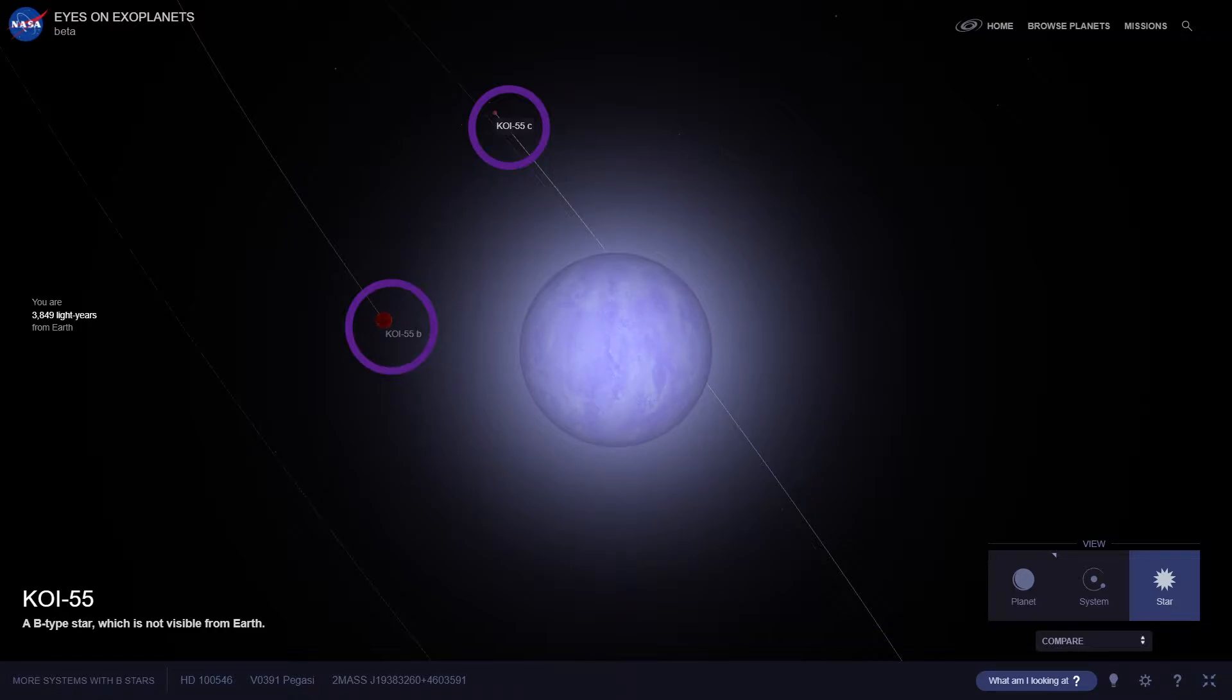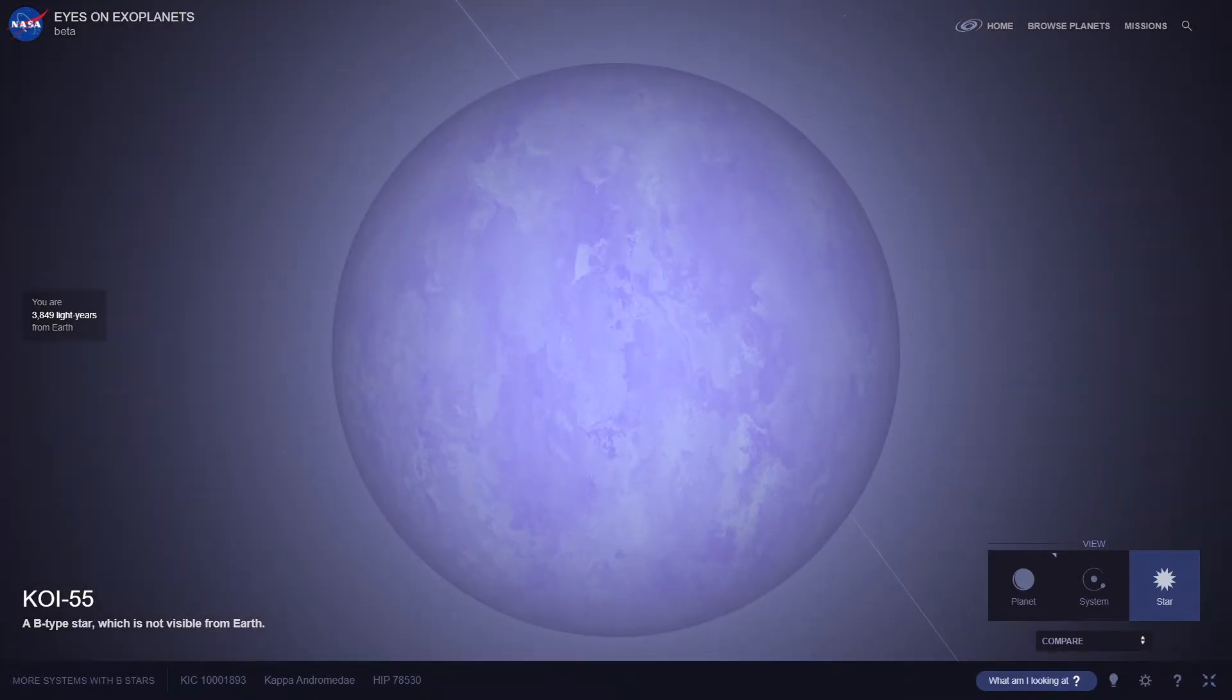We'll discuss the planet in a bit. Right now let's talk about the star. This star is about 4,000 light years away from us. It used to be a main sequence star just like our sun.